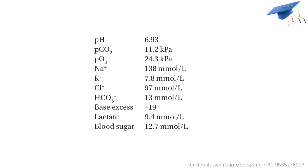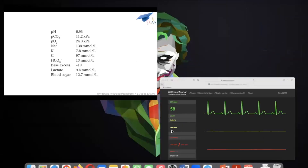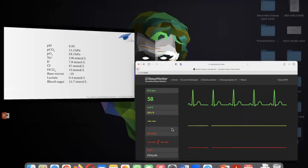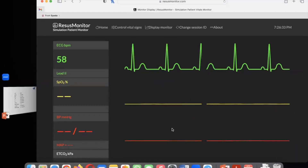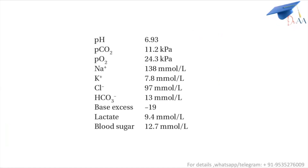We can give him some fluids as well — just give a bolus of saline. This is the rhythm on the monitor. Can I check the pulse? No pulse. He's still in PEA — continue with compressions. We've gone through the five H's and T's and corrected the blood gas. Is there anyone who would like to give any suggestions?